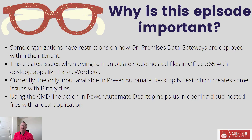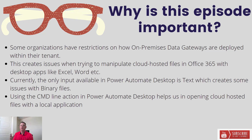Some organizations have restrictions on how on-premises data gateways are deployed within their tenants or organization. This creates challenges when you have cloud-hosted files such as those in Office 365 and you want to open and manipulate those files with desktop applications like Microsoft Excel or Word. You can't send the file from the cloud to the desktop through the gateway and then pass the location of the local file, because the gateway doesn't exist.